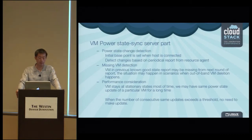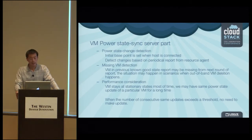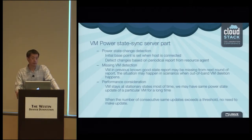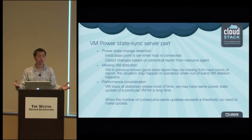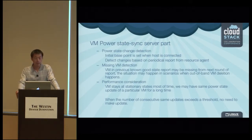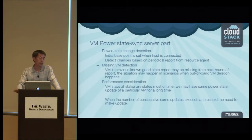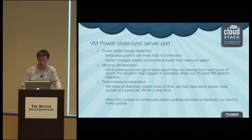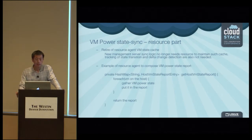For large deployments with tens of thousands of hosts, these reports coming in frequently become a burden for the management server. To address performance, we leverage the fact that most VMs will stay in a stationary state for the majority of their lifetime — a customer starts a VM and lets it run 24/7. Because the state from the agent looks almost the same across reports, we do accounting: when the number of consecutive identical updates exceeds a threshold, we skip saving to the database, reducing write load.